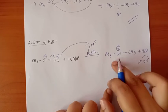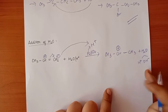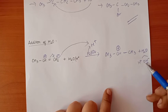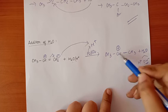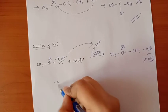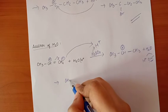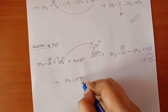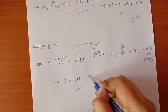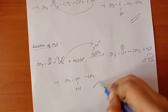The carbocation reaches a stable state. Then we attach OH⁻ here. The product is CH3-CH(OH)-CH3 and CH3. This is our product. Very simple.